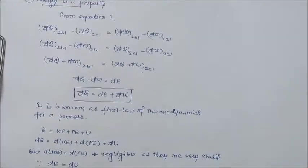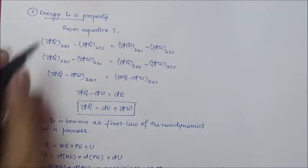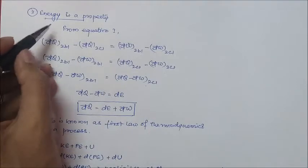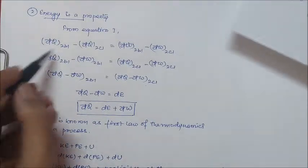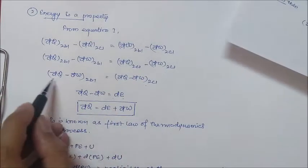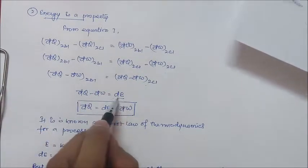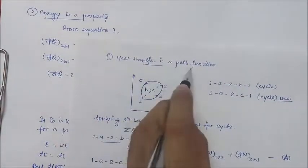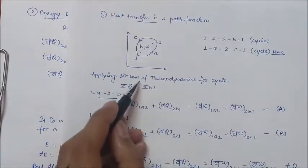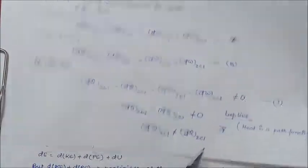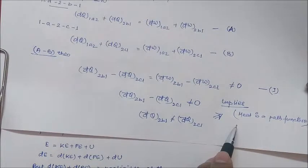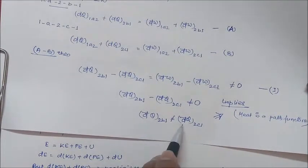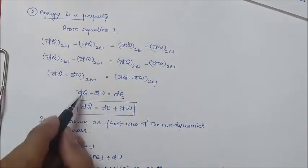In this way, using the first law of thermodynamics, we have seen that energy is a property because δQ − δW is the same for both paths, and heat is a path function because heat transfer is not equal for both paths between the same endpoints. For energy it is the same; for heat it depends on the path.